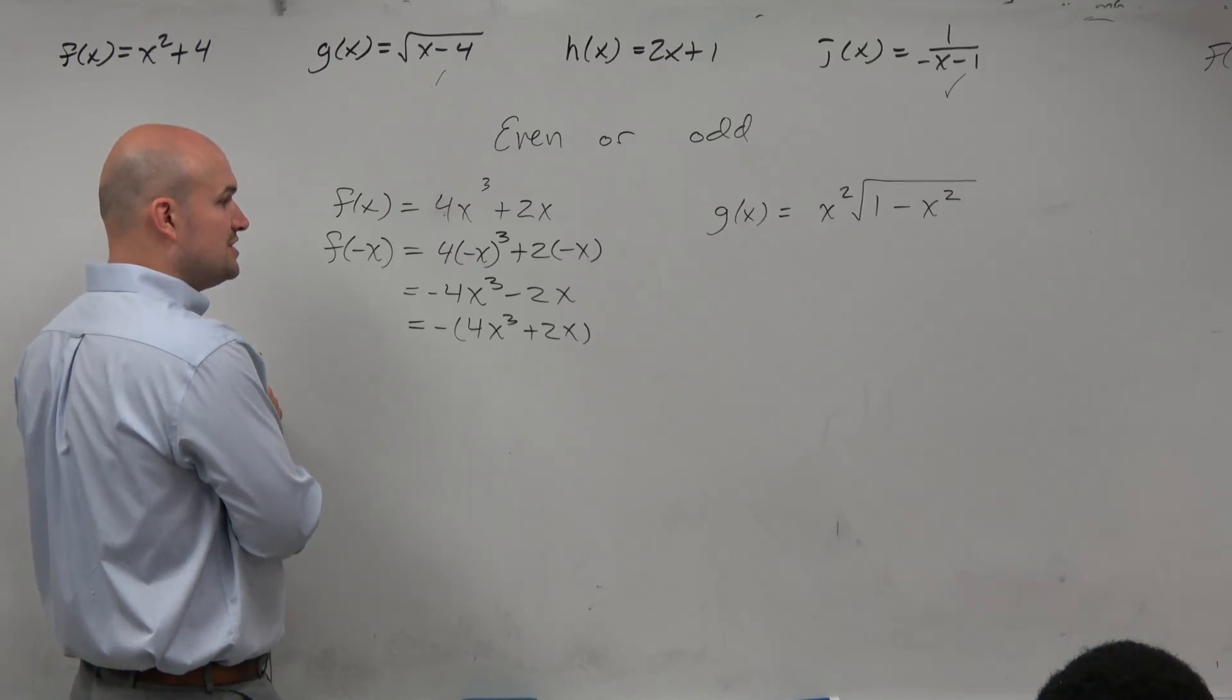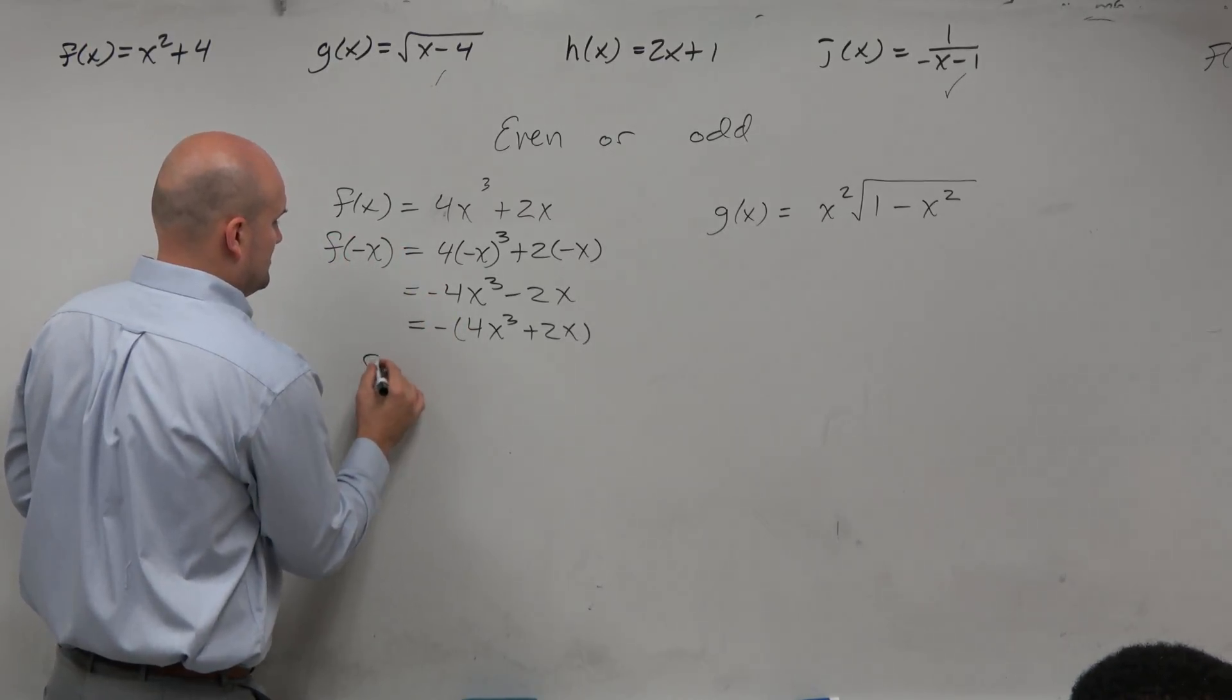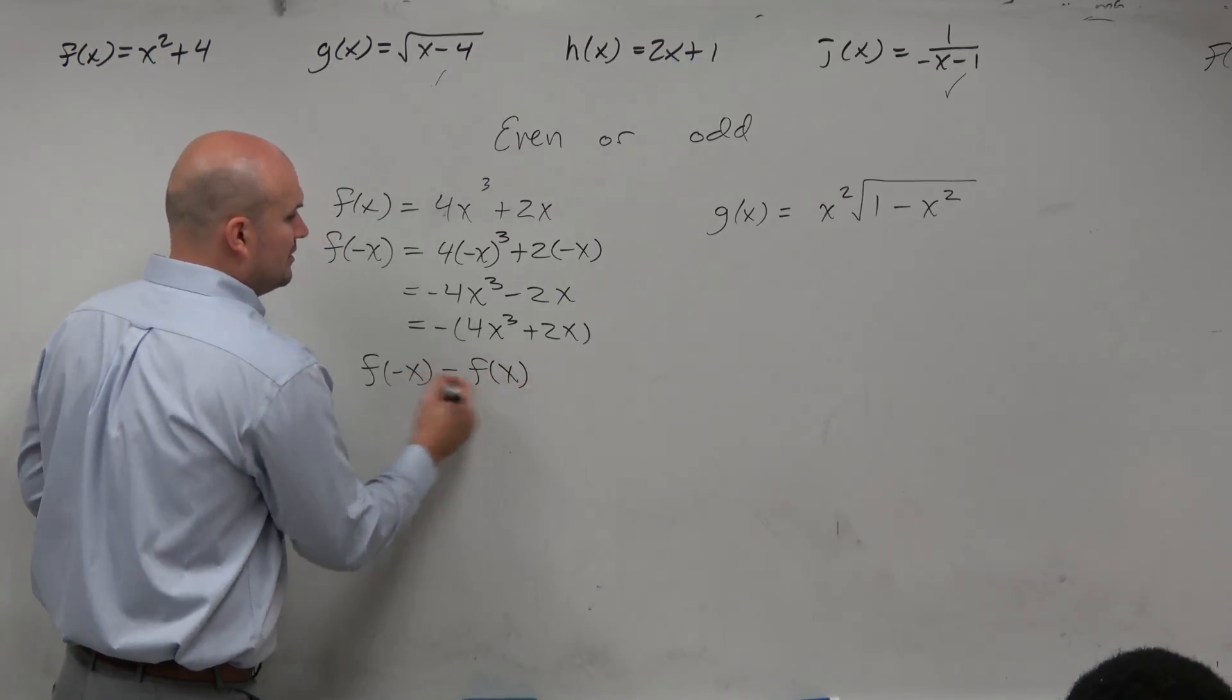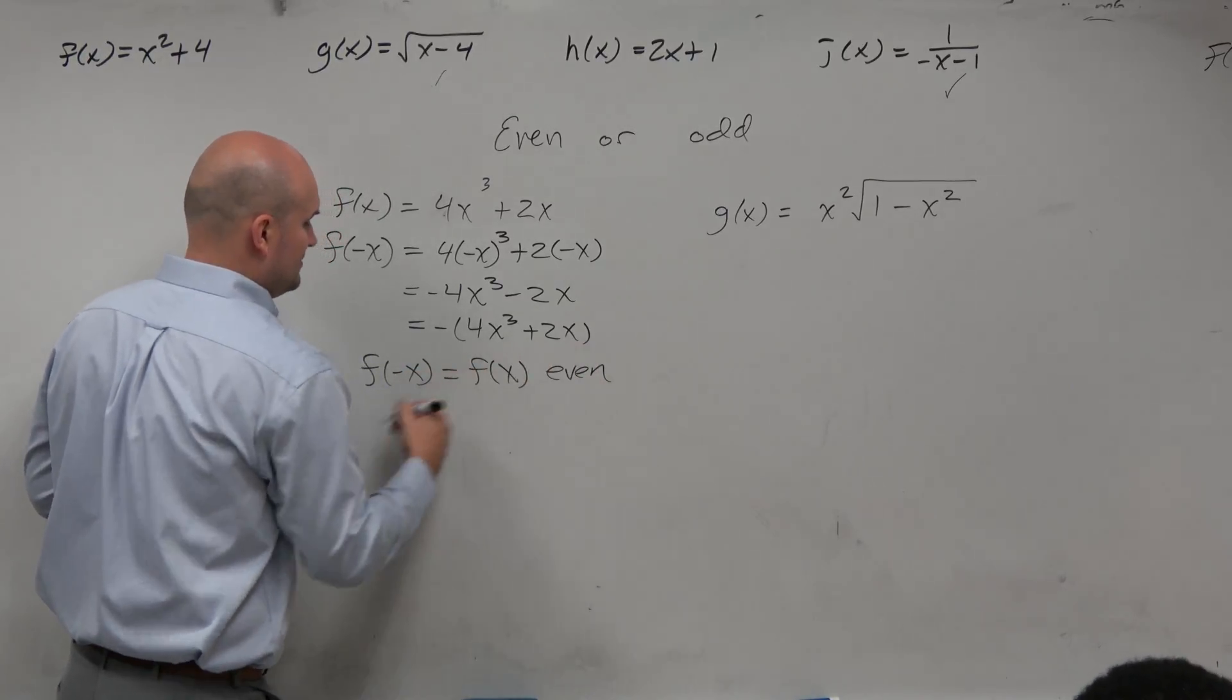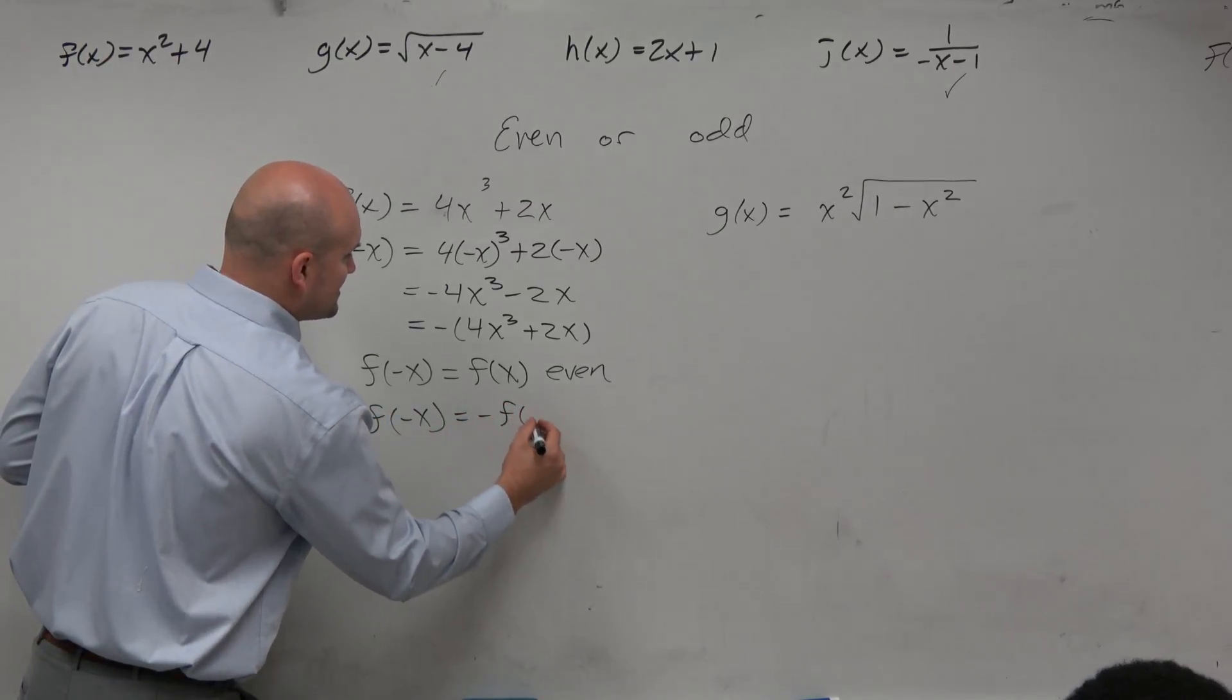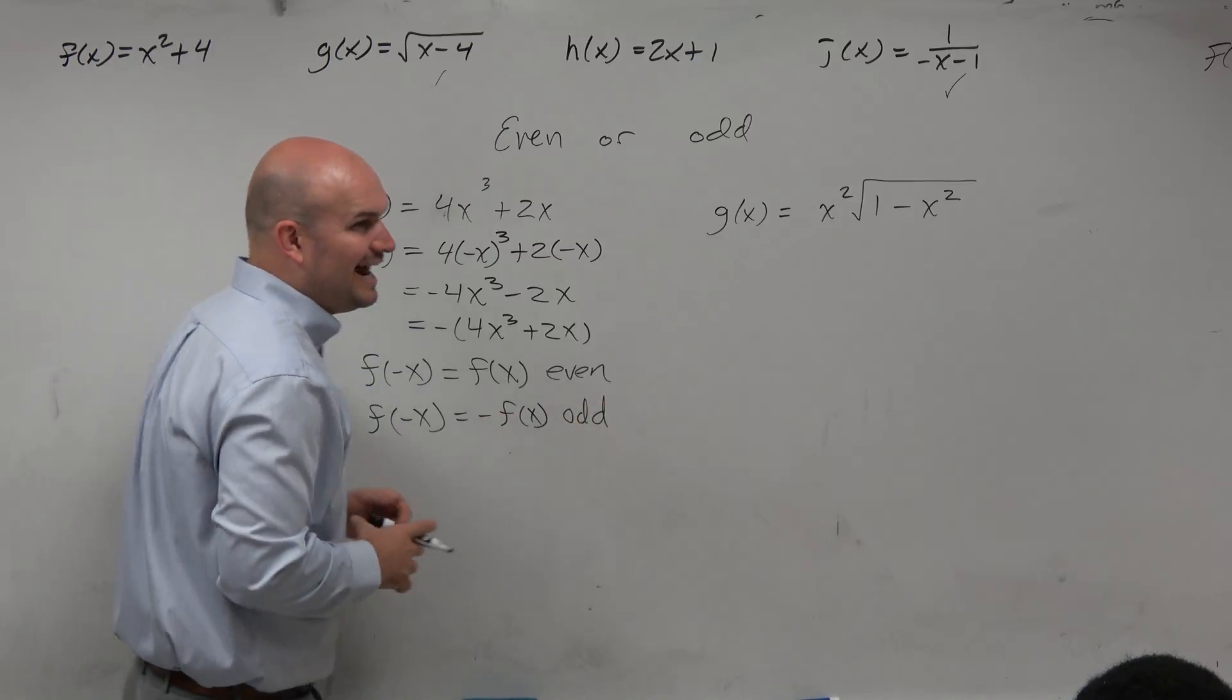OK, so if you have f of negative x and you get back the original function, then the graph is said to be even. If you plug in f of negative x and you get opposite of f of x, then the function is odd.